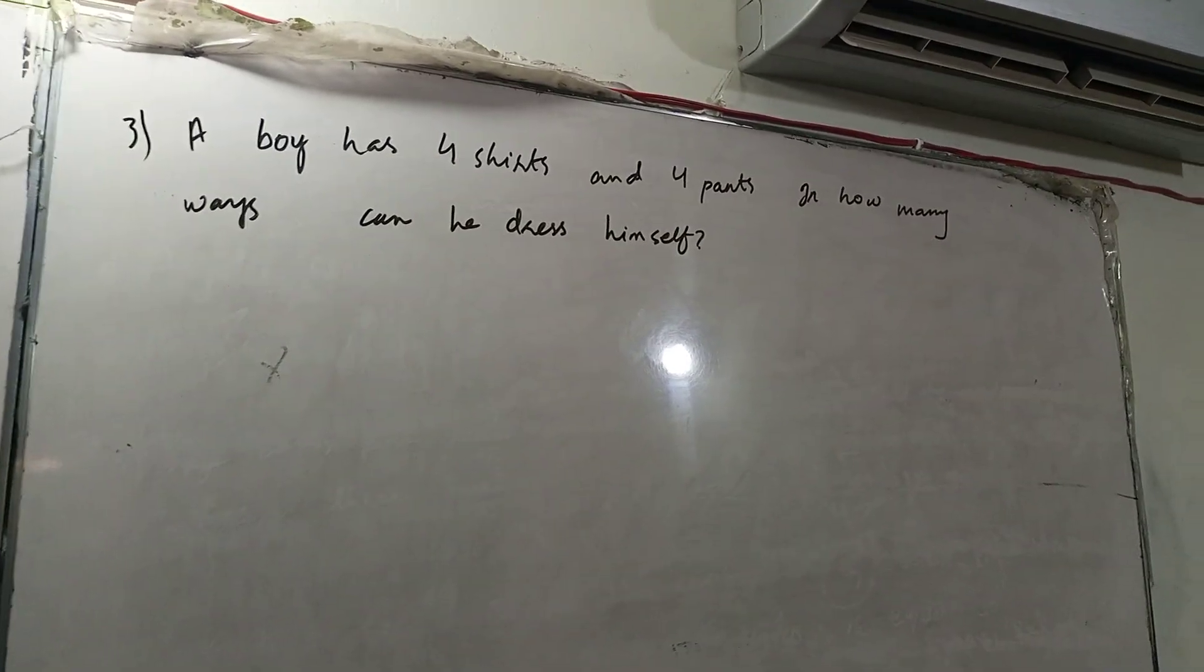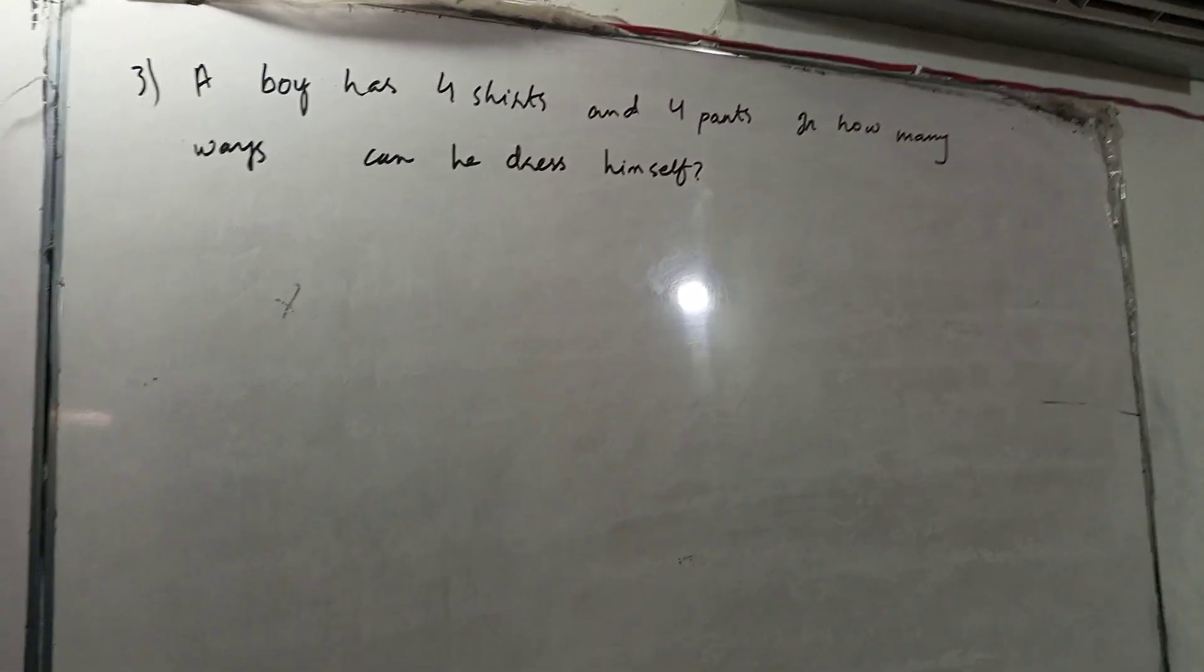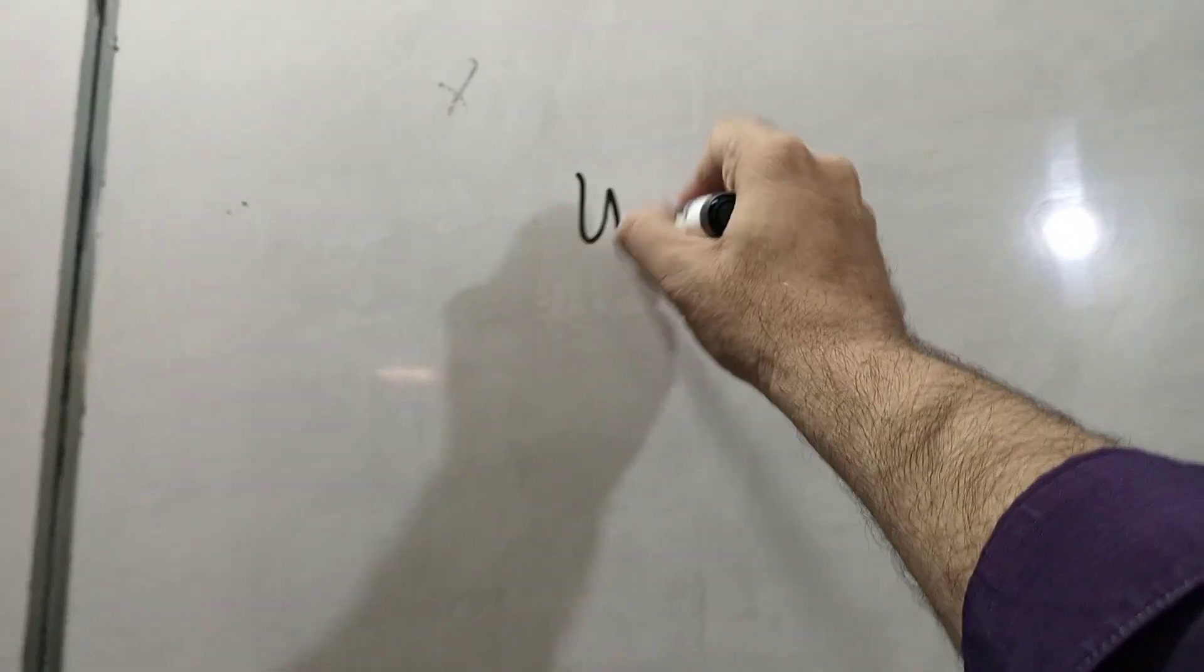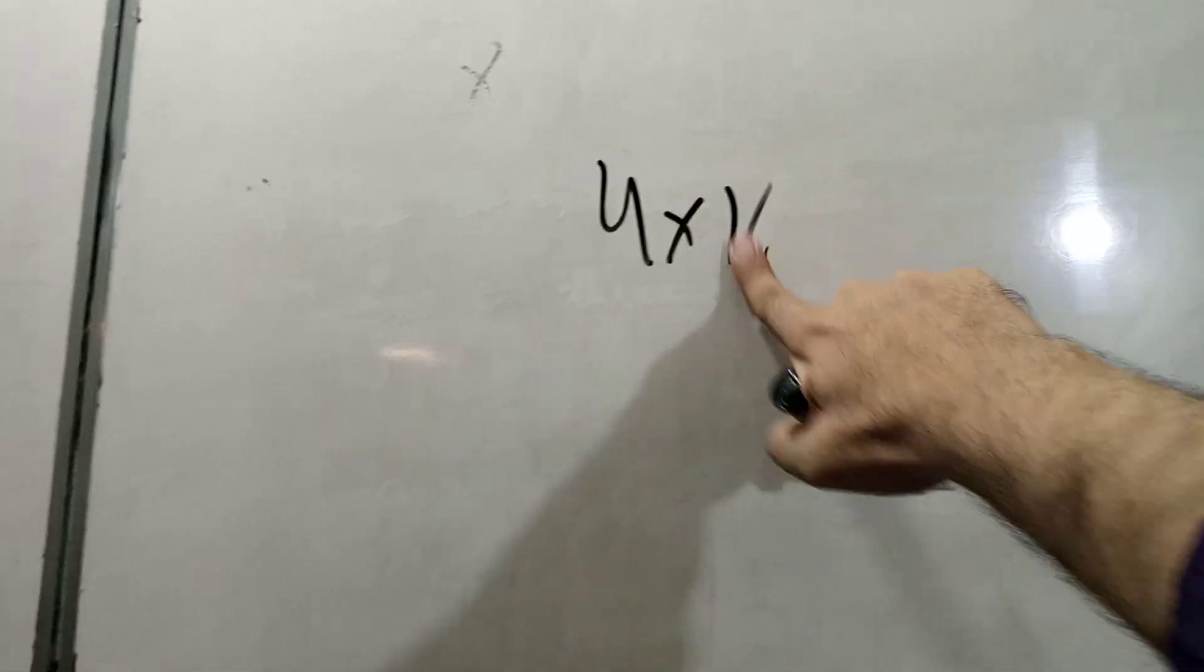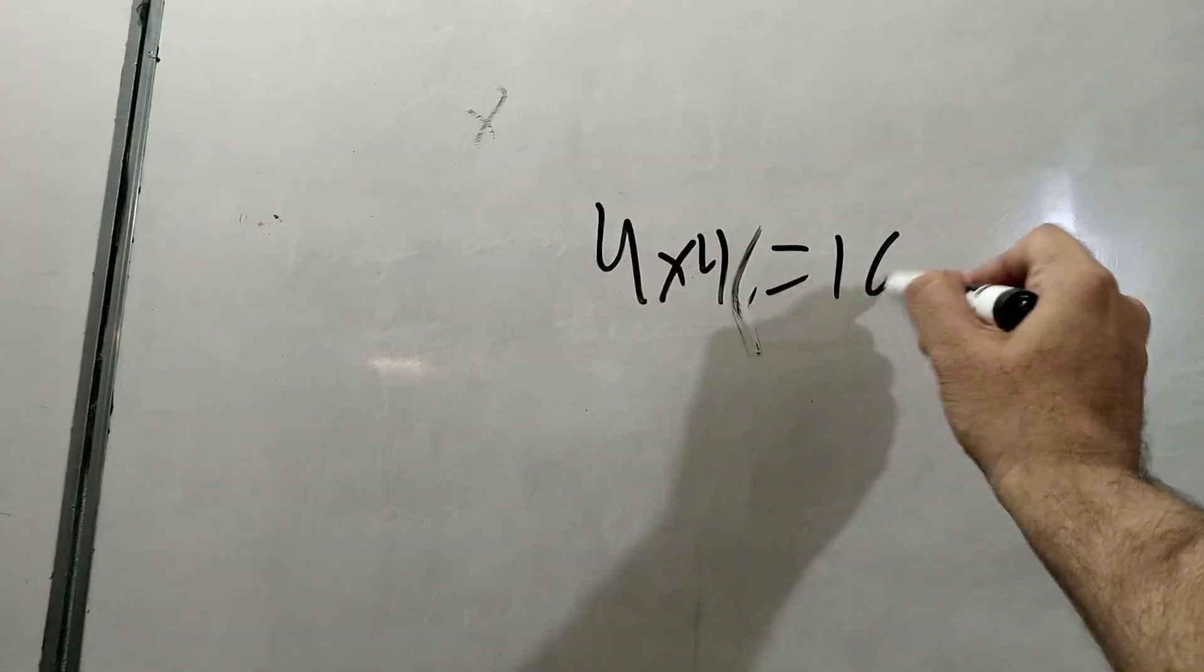Then, they say, they have 4 shirts and 4 pants. How many combinations to dress? So, it's a very easy one. 4 times 4. The answer will be 16.